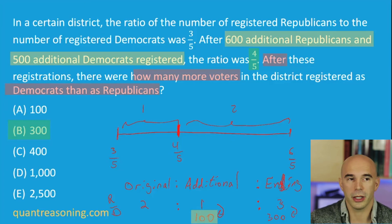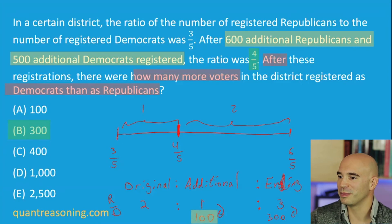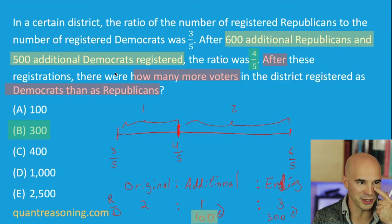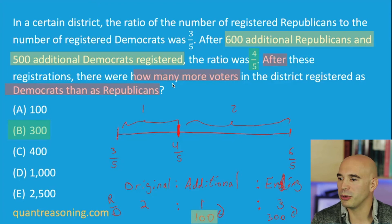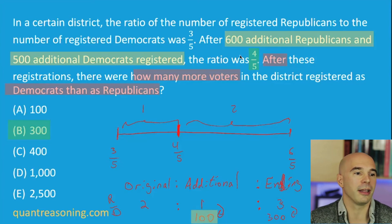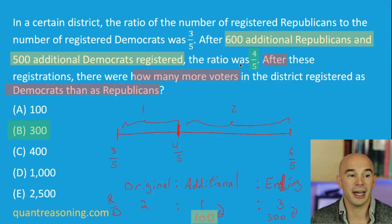Eric asks: what if the numbers were uglier on the exam? The answer is: then it's not a GMAT question. The benefit the GMAT intends to provide to people who use a number line — versus the penalty for those who use algebra — would disappear with ugly numbers. These numbers worked out beautifully on purpose; they were chosen that way. It's not luck that all the denominators were the same (3 to 5, 4 to 5, 6 to 5) — it's by design.